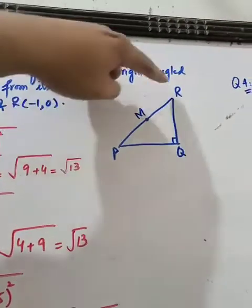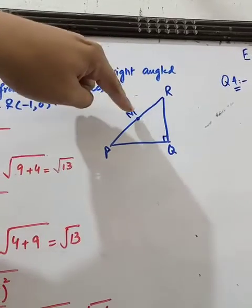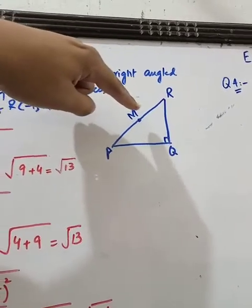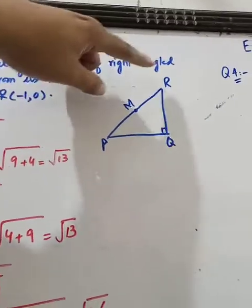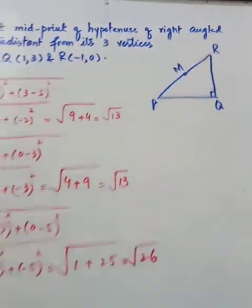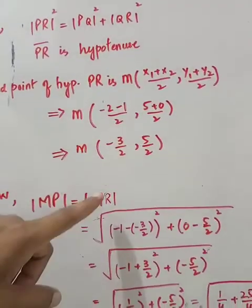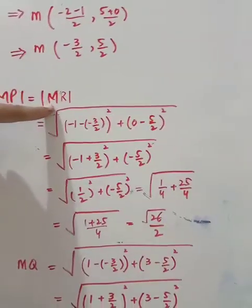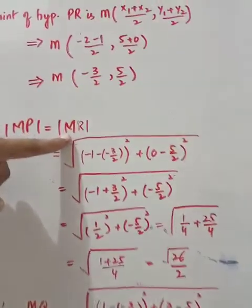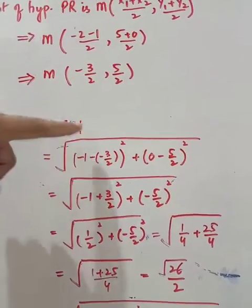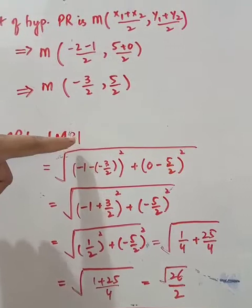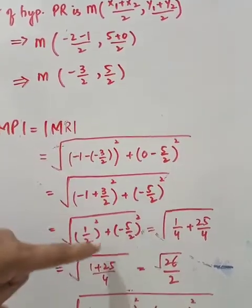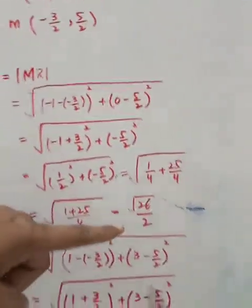MP aur MR ko hum proof karte hain. M jo midpoint hai uski value kya aati hai — ye dono barabar hain. MR ki value find karte hain distance formula se: M ke points x1 y1 honge, R ke points x2 y2 honge. Values put karoge to answer aayega.